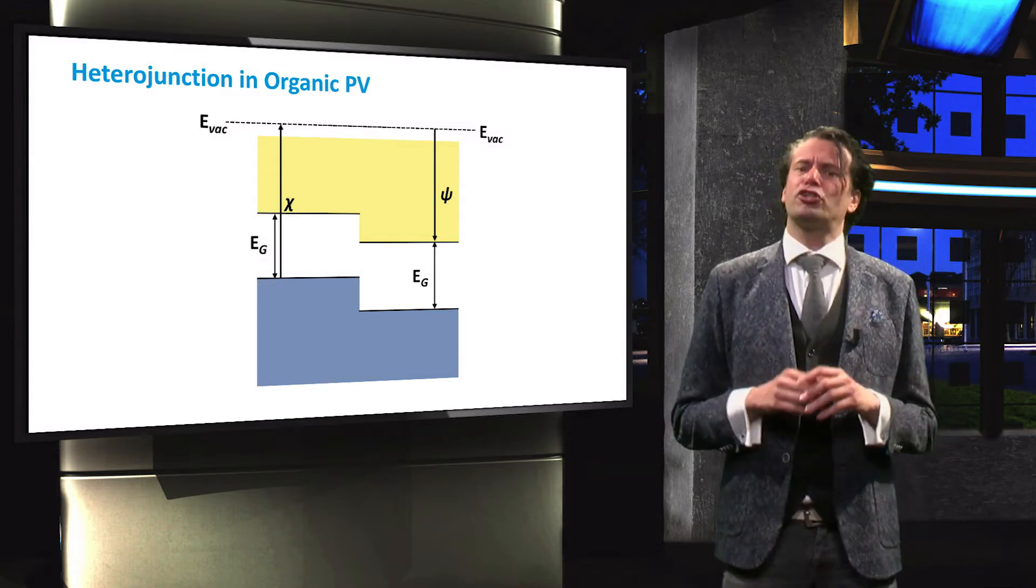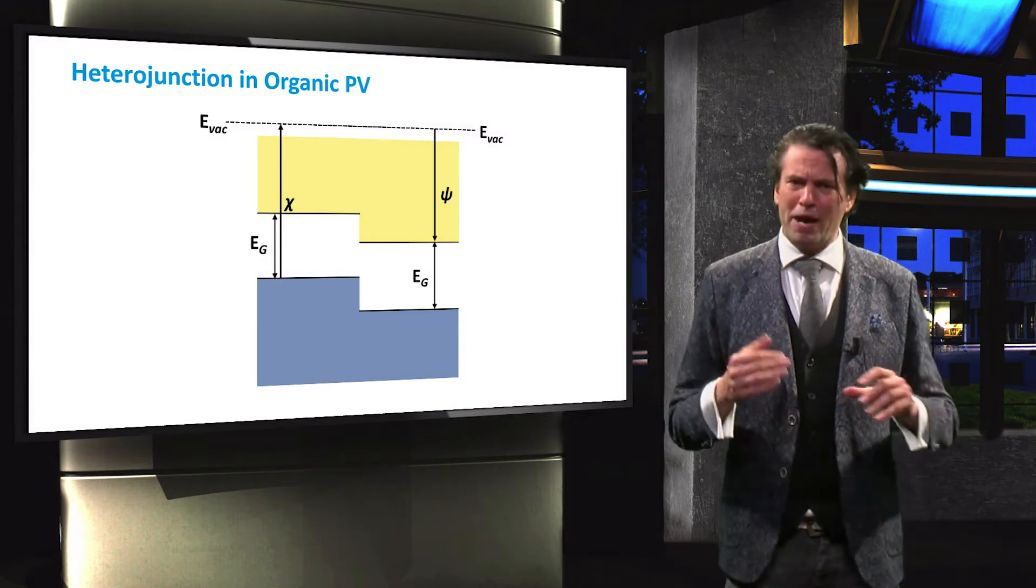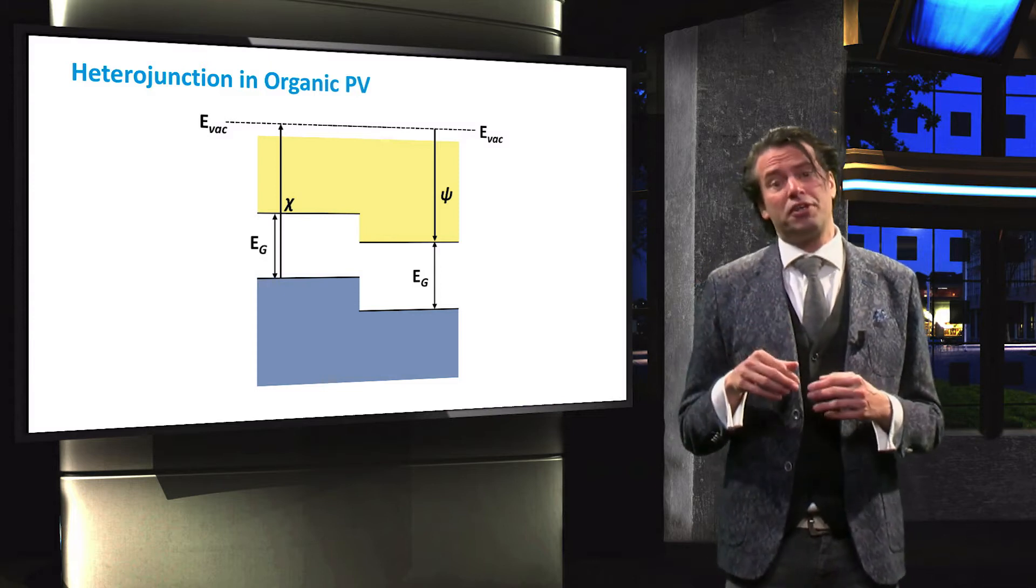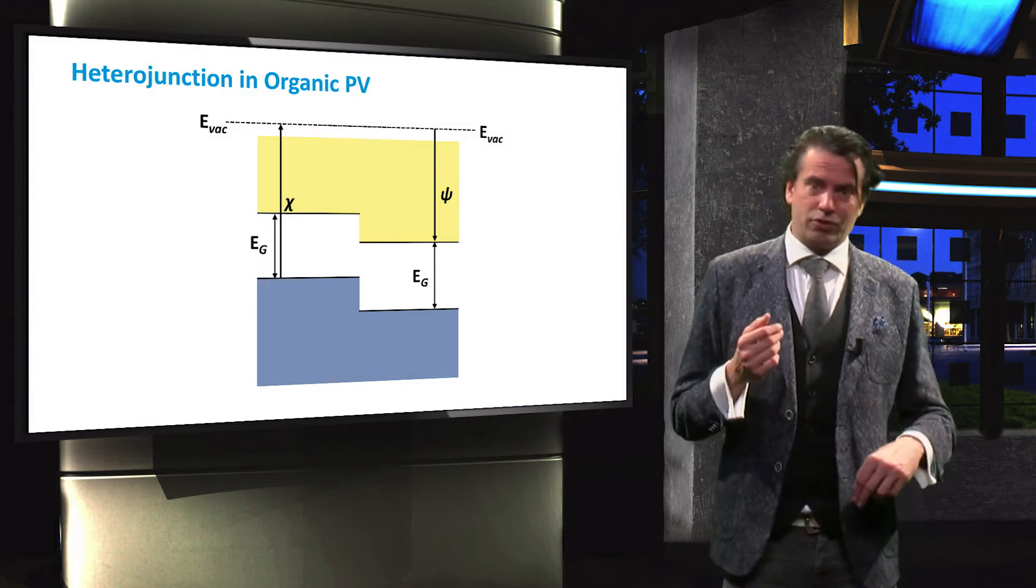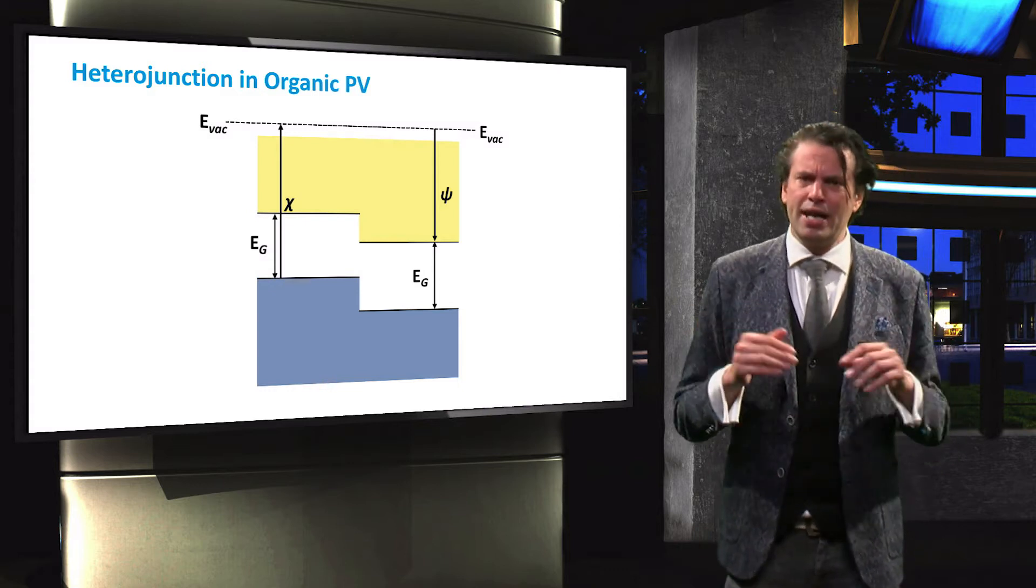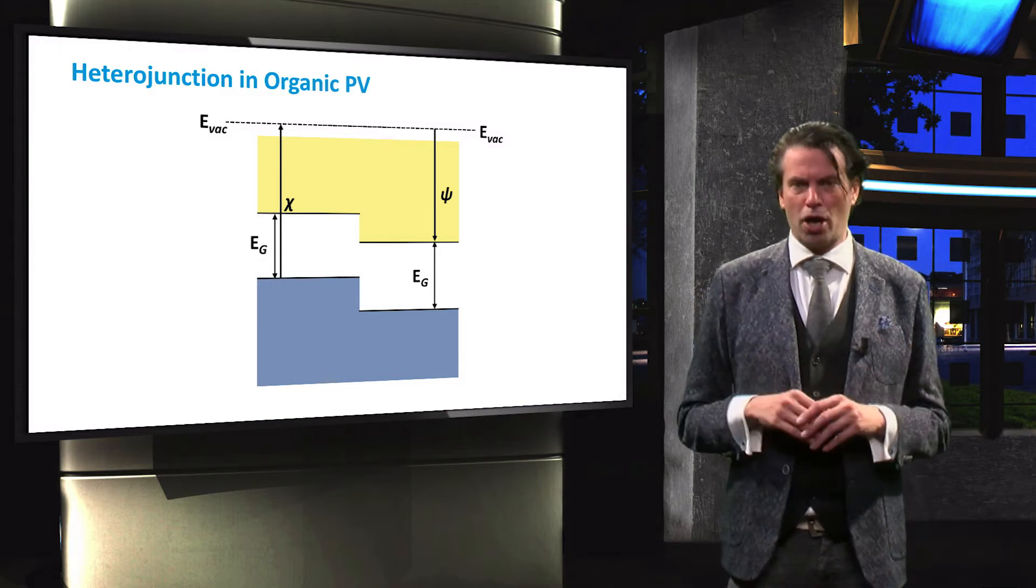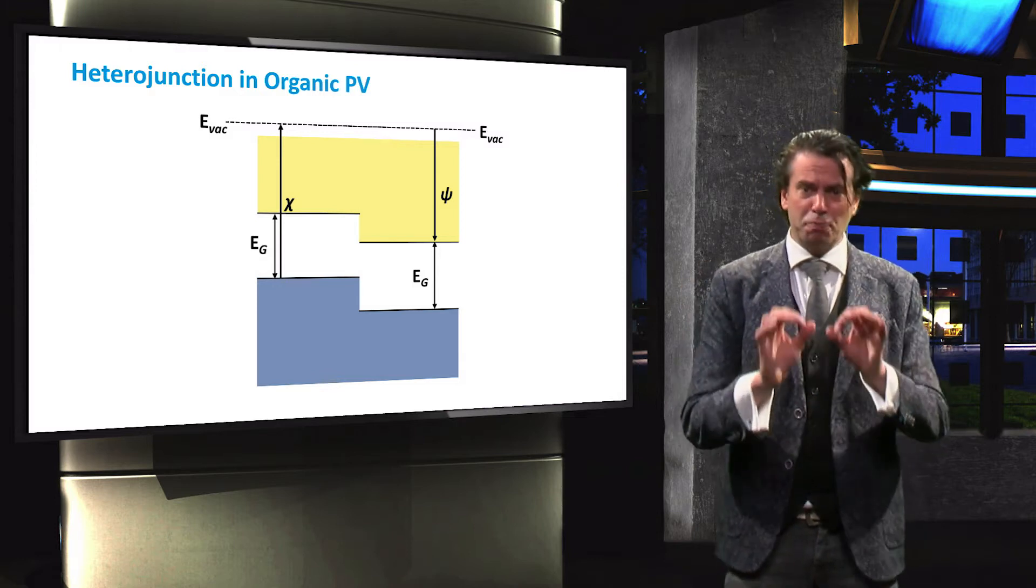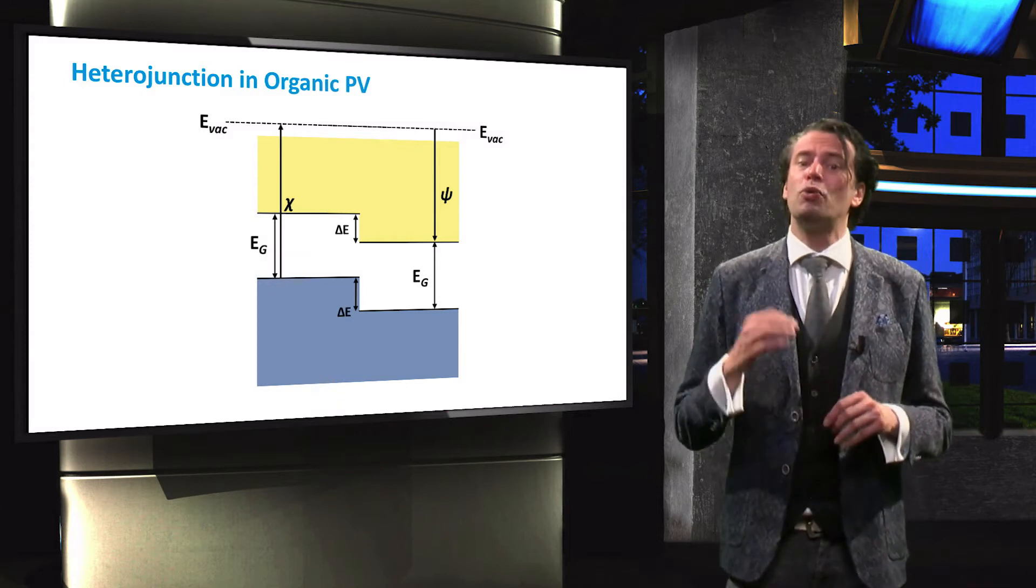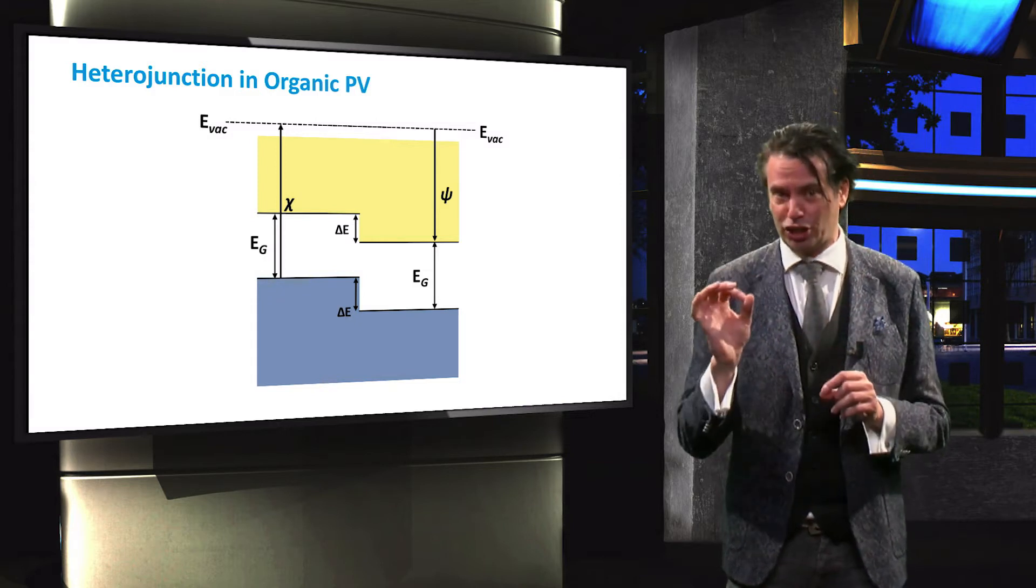The heterojunction of intrinsic organic materials therefore lacks any sort of band bending as can be seen in this figure. When we bring together an electron donor and an electron acceptor, their vacuum levels will align and a misalignment in their HOMO and LUMO levels appears. This produces an electrostatic force at the interface which can be very useful for the purpose of charge separation.